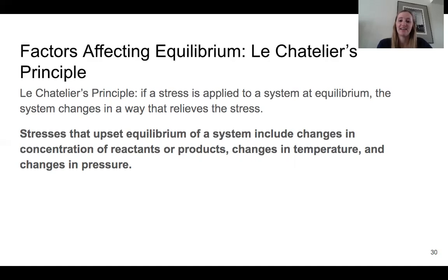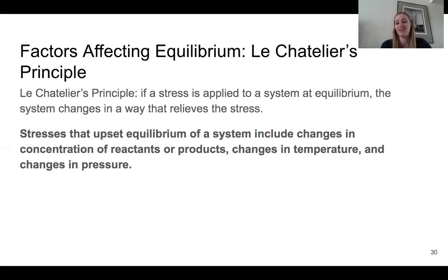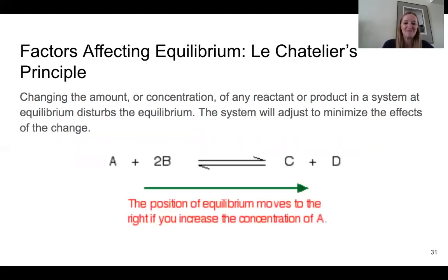In reactions, the things that can upset the equilibrium are: the concentration of the reactants or products, changing the temperature, and changing the pressure. All those things can affect the equilibrium. First, we're going to talk about concentration — numbers 39 and 40.